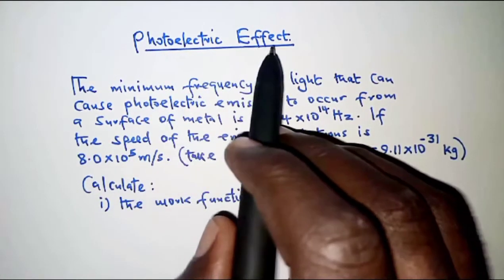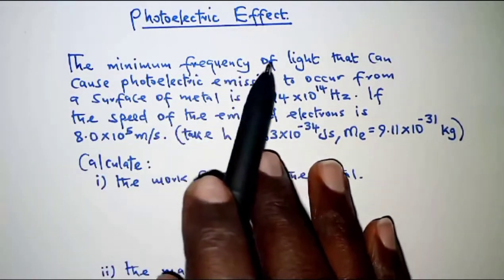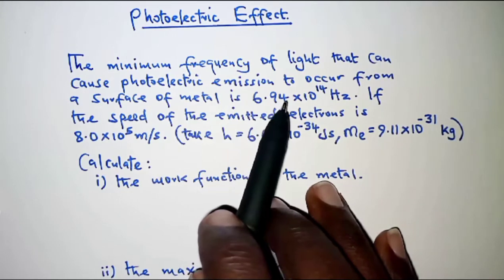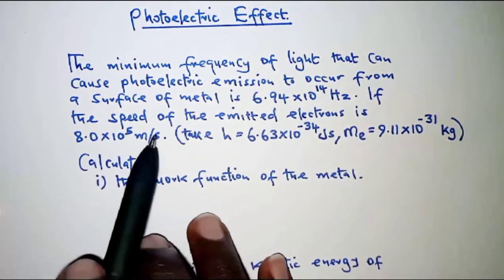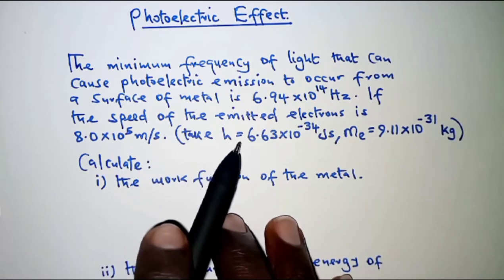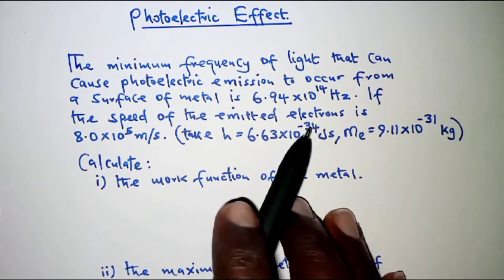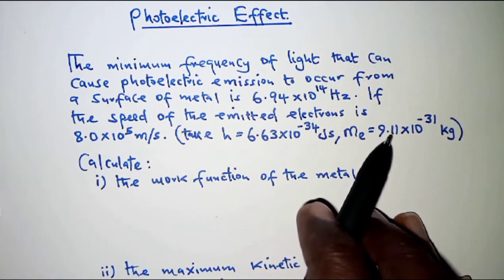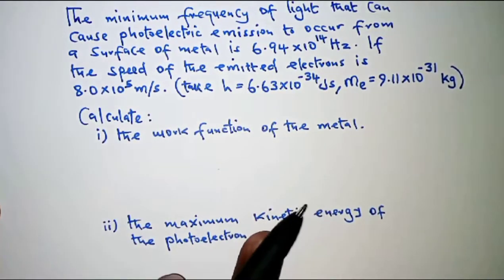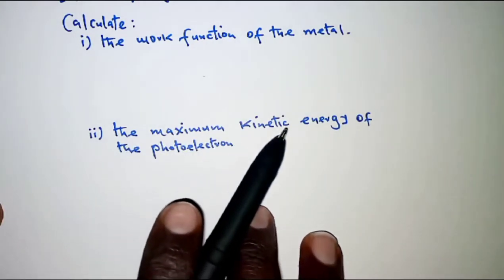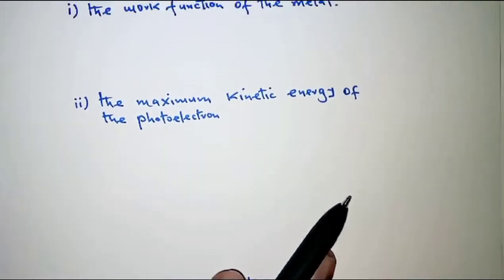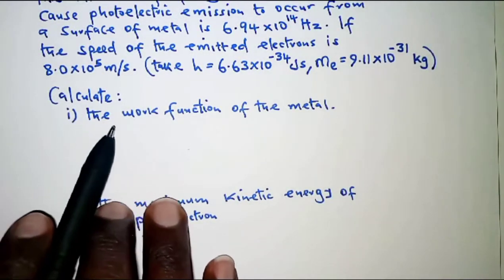The question today is on the photoelectric effect. The minimum frequency of light that can cause photoelectric emission from a metal surface is 6.94 × 10¹⁴ Hz. The speed of the emitted electron is 8.0 × 10⁵ m/s. Planck's constant is 6.63 × 10⁻³⁴ J·s and the mass of an electron is 9.11 × 10⁻³¹ kg. We need to calculate: (i) the work function of the metal, (ii) the maximum kinetic energy of the photoelectron, and (iii) the frequency of the source.